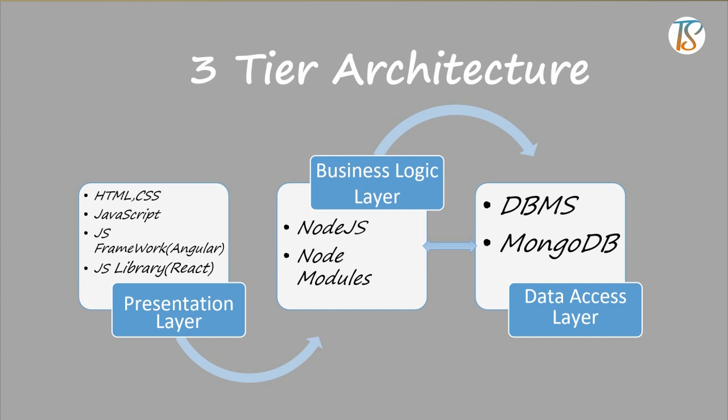The data access layer is concerned with how we store and interact with data, typically in the form of a database. In the presentational layer, we use technologies like HTML, CSS, JavaScript, or JavaScript frameworks and libraries. In the business logic layer, we will use NodeJS and Node modules, though we can use other technologies such as Java or Python — but for this course, we will use NodeJS. And on the data access layer, we will use MongoDB.